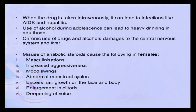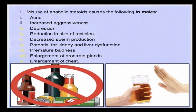Some of the changes seen in females due to misuse of anabolic steroids include masculinization, increased aggressiveness, mood swings, abnormal menstrual cycles, excessive hair growth on the face and body, enlargement of the clitoris, and deepening of voice. Misuse of these steroids in males can cause acne, increased aggressiveness, depression, reduction in size of testes, decreased sperm production, potential for kidney and liver dysfunction, premature baldness, and enlargement of the prostate glands and chest.